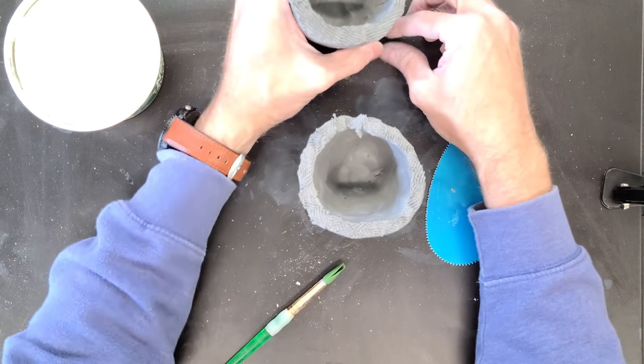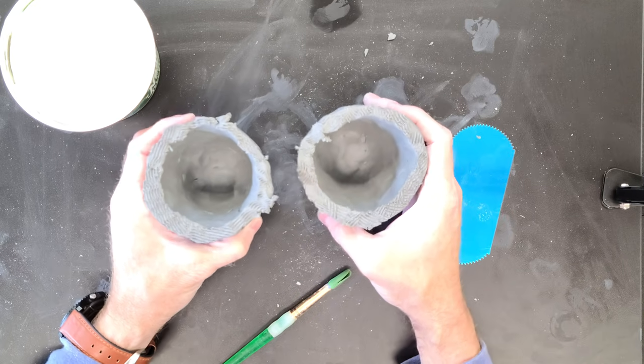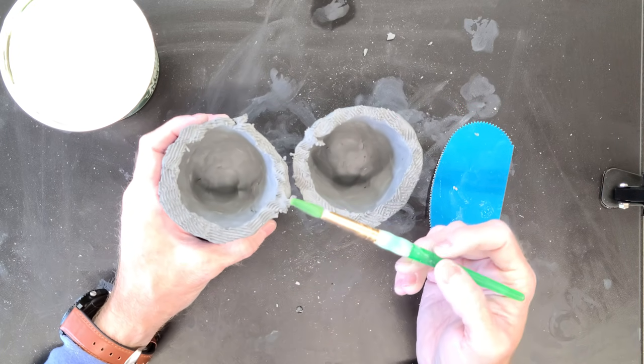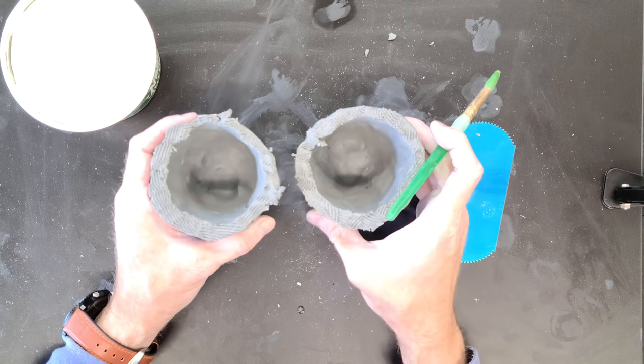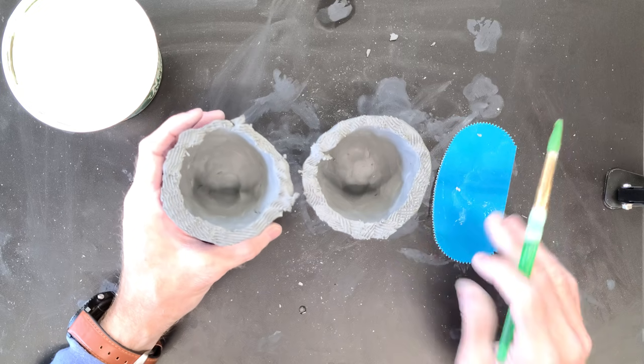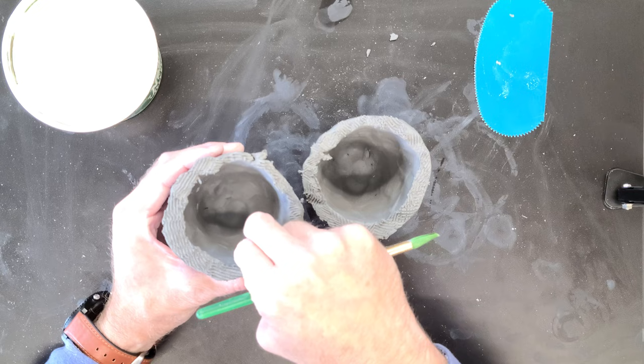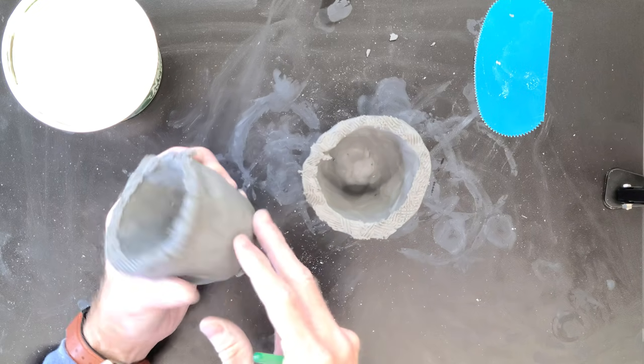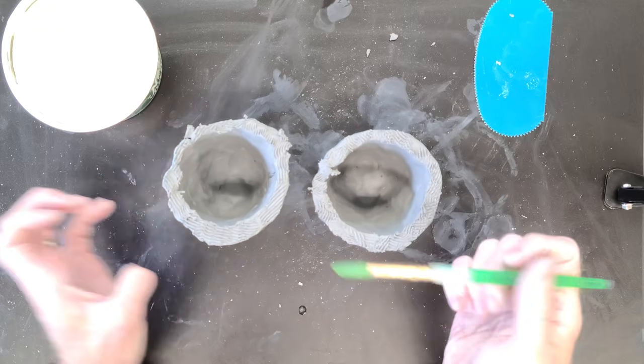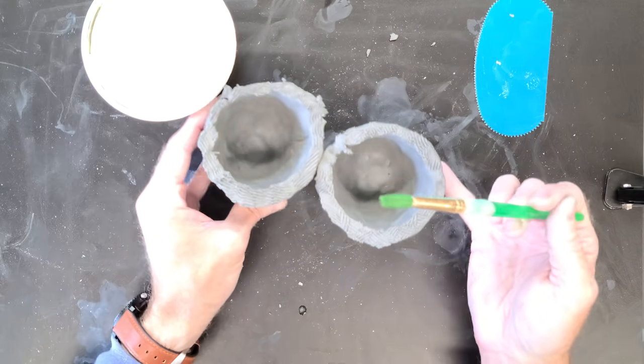I'm going to attach these now. This process is called scoring and slipping. Normally slip would be very squishy clay, about the consistency of toothpaste. We don't really need it because this clay is fairly moist and pliable, so I'm just going to use some water.